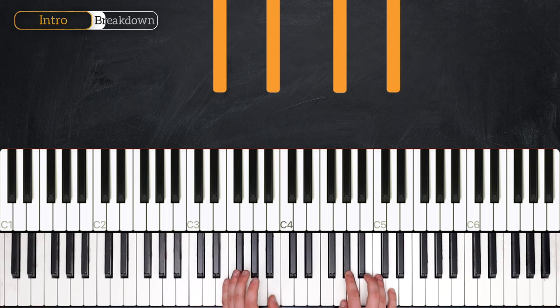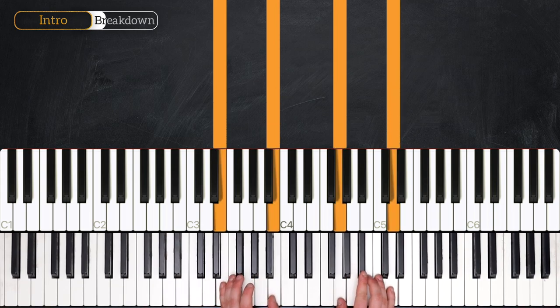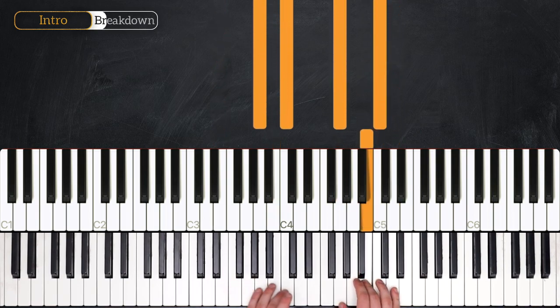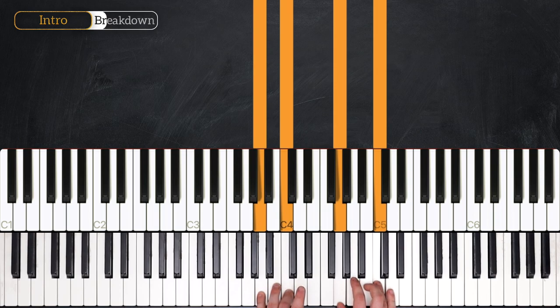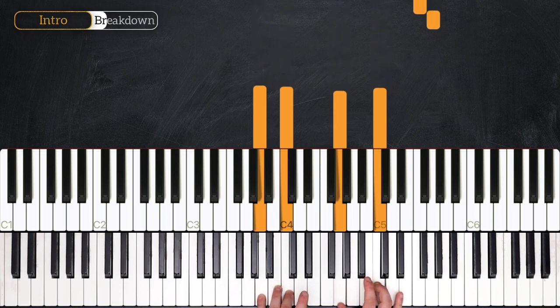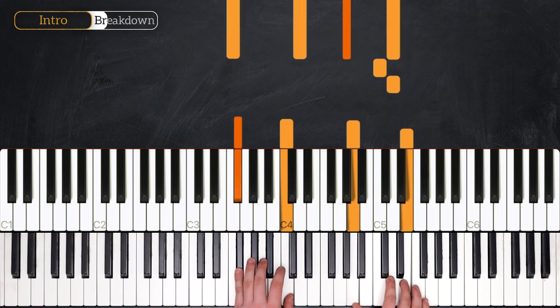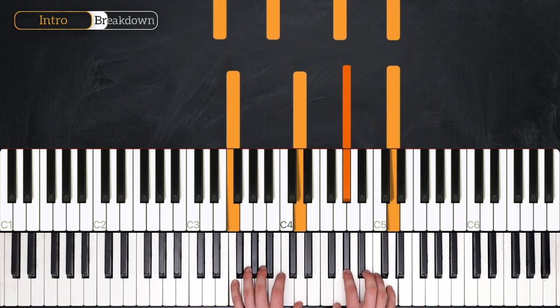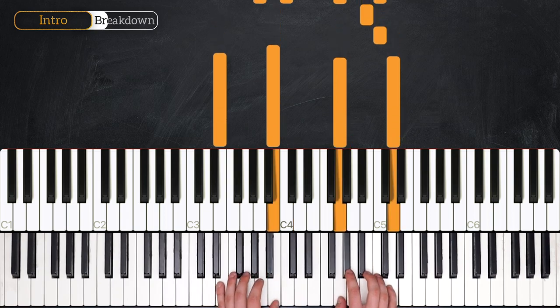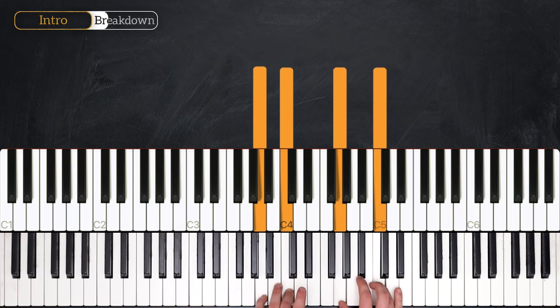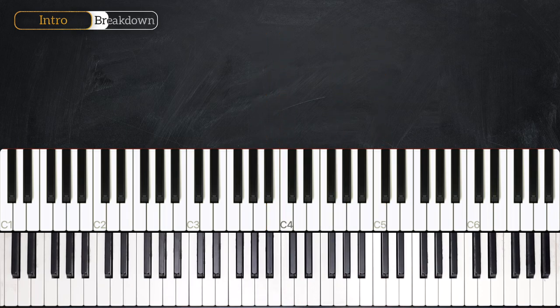Then we move to our E-minor-seven. And we do a very similar lead-in, to the last two, with C, B, C. And we land on the A-minor-seven. So... C, B, C. So that's the first four bars of the intro.